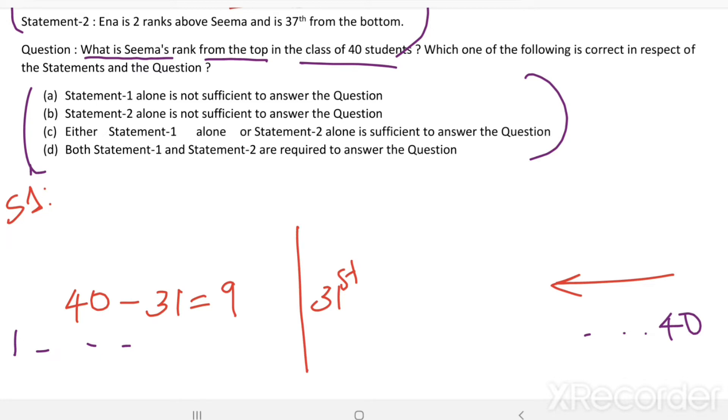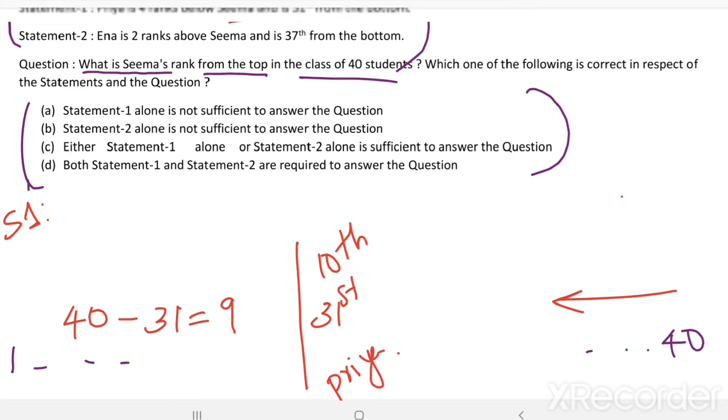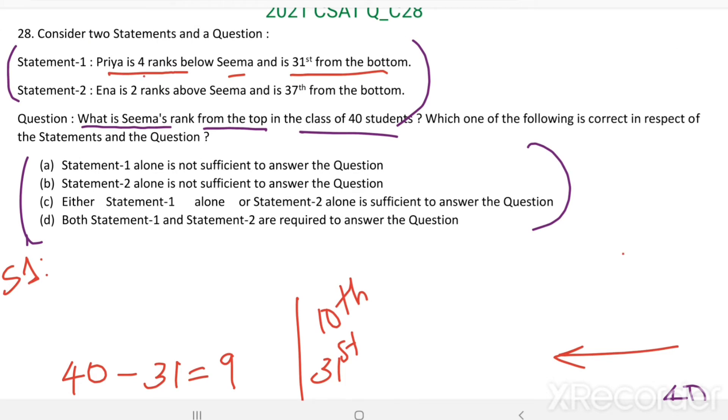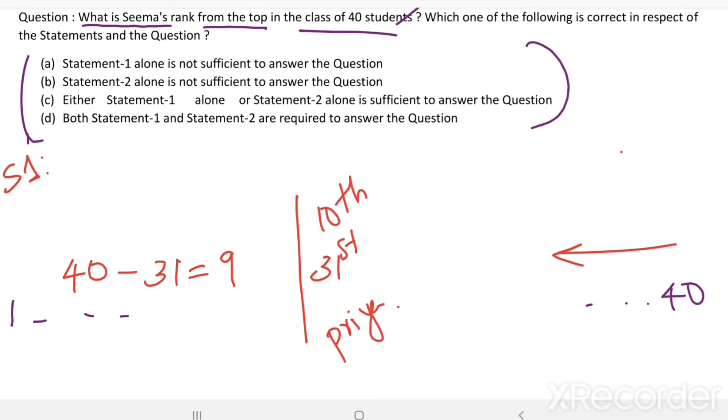Then her rank from the top equals 10th. So this is Priya's position from bottom and top. Then Priya is 4 ranks below SEMA. 4 ranks below SEMA. 1, 2, 3, 4. This is SEMA's position.